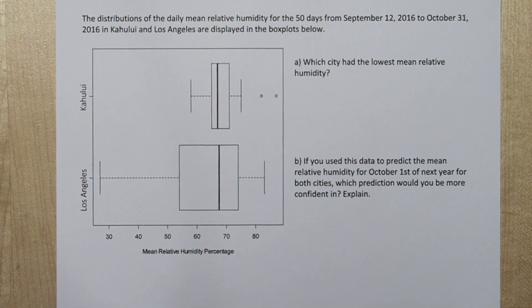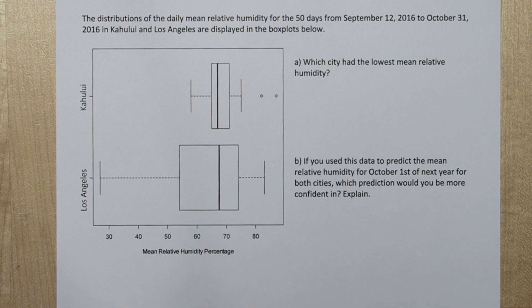Box plots are graphical displays of the five-number summary, so they describe the minimum, quartile 1, median, quartile 3, and maximum. They also show outliers, so let's find that information on these two box plots.